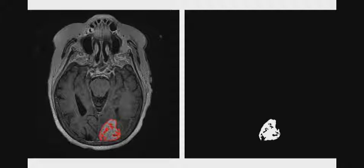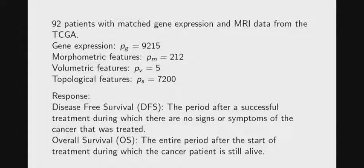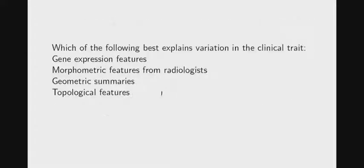An application that people might care about more is in medical imaging. That's a brain. You can section out the tumor and that's a picture of the tumor. We can ask a question because we have 92 patients. We have gene expression. These volumetric features are just useless. We have the topological features very similar to how I showed you. These 212 morphometric features are features that oncologists and radiologists agreed to. There are a bunch of them. We can ask which of these do the best in explaining variation in disease-free survival and overall survival.